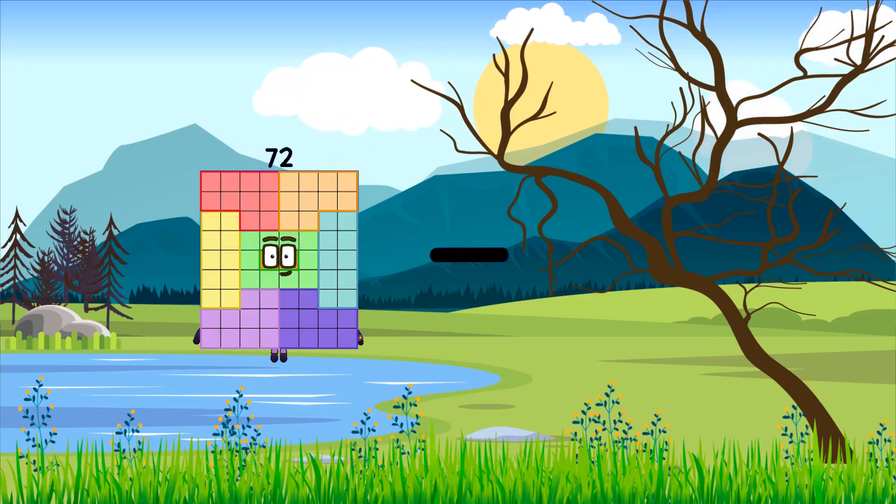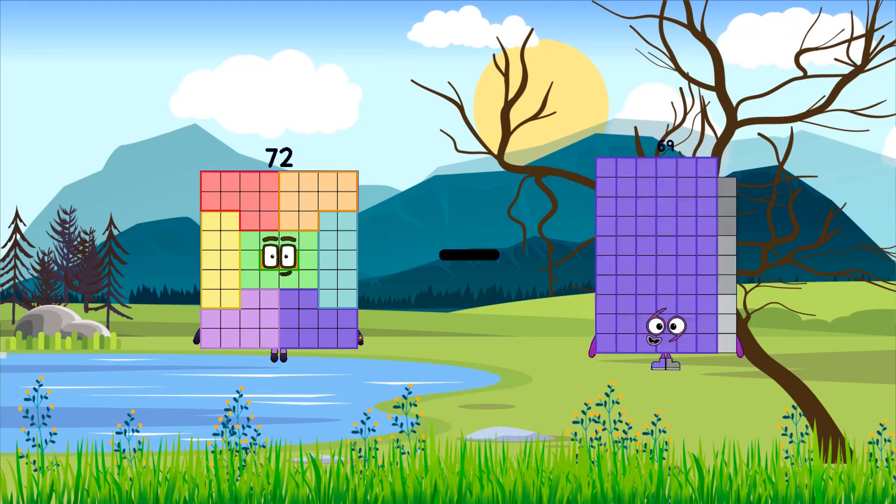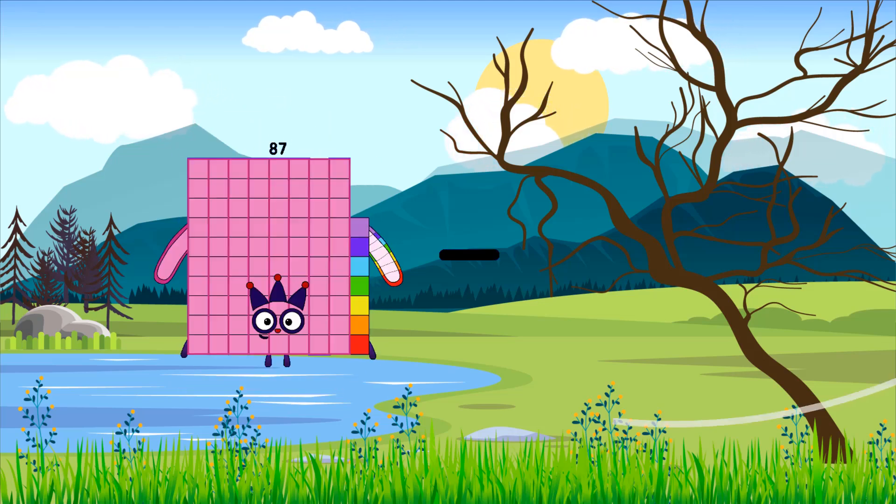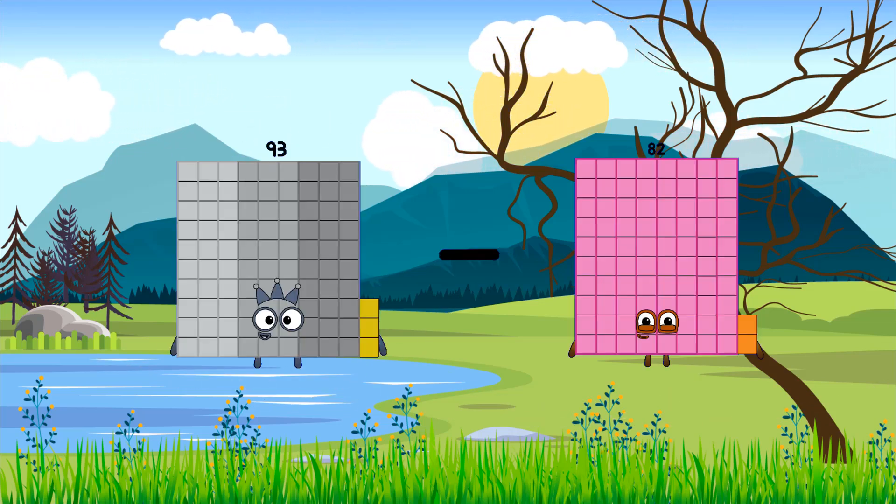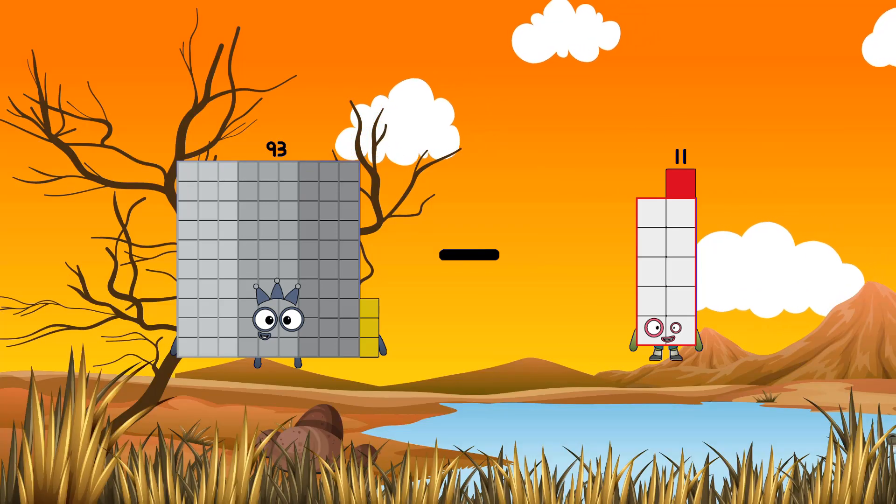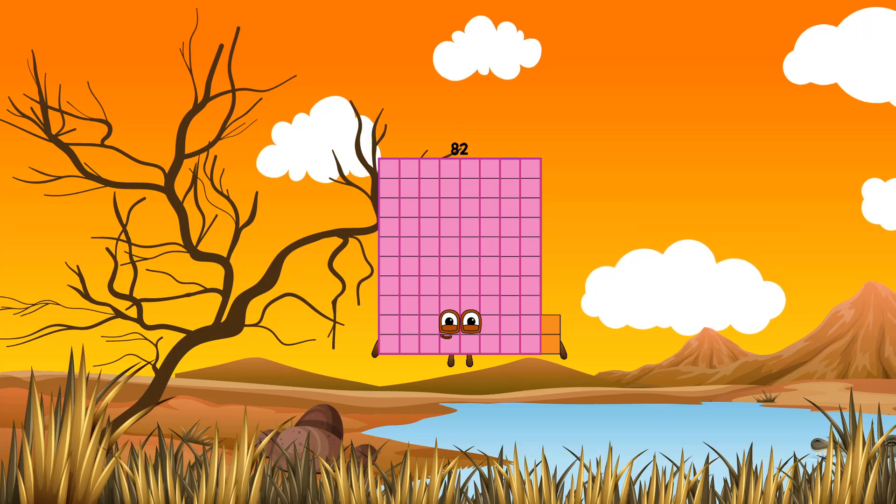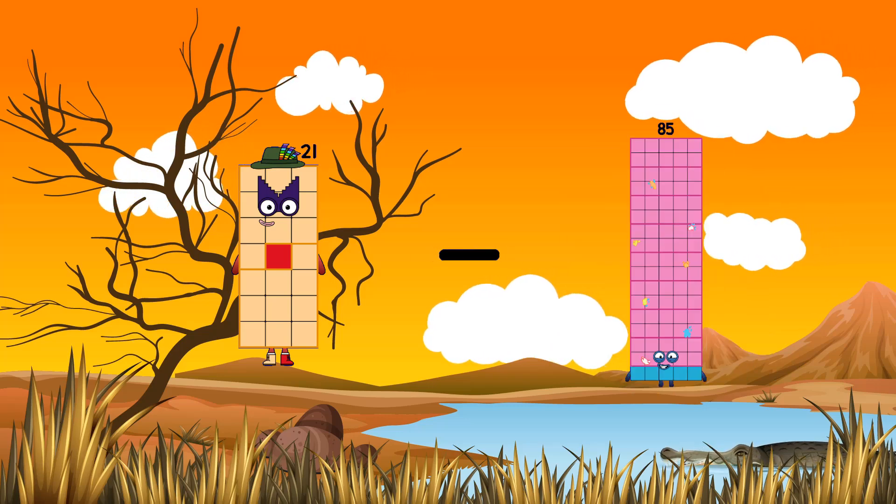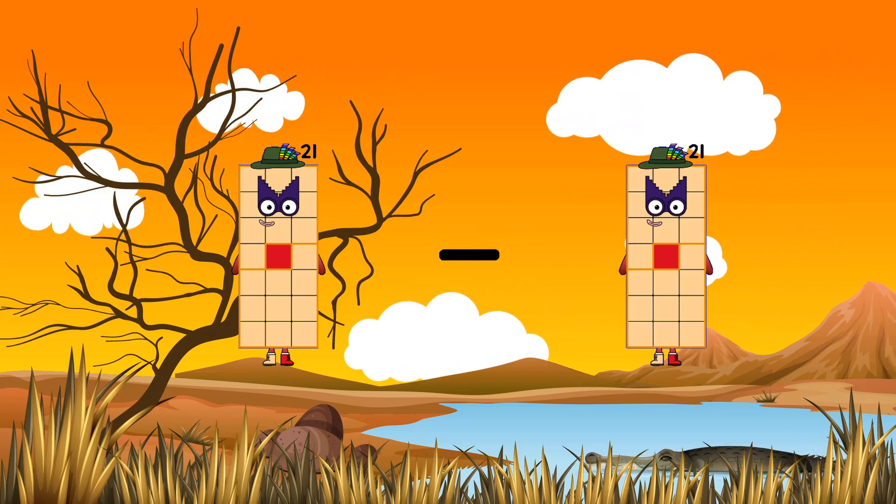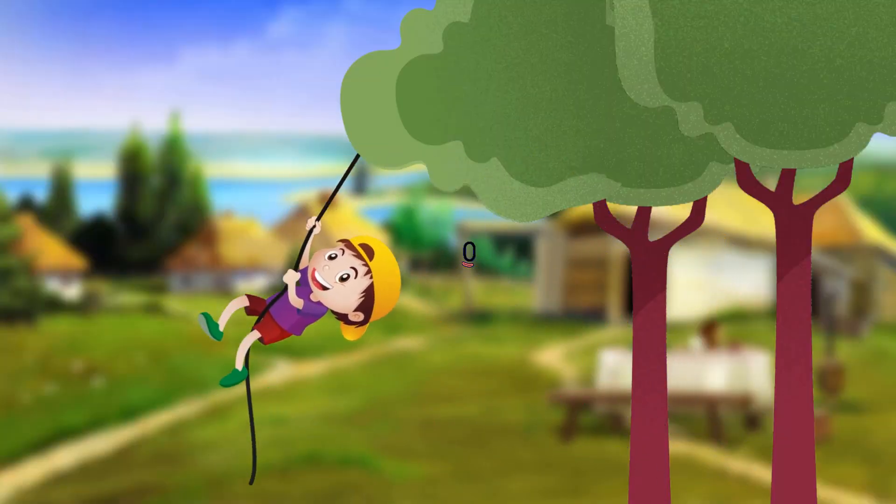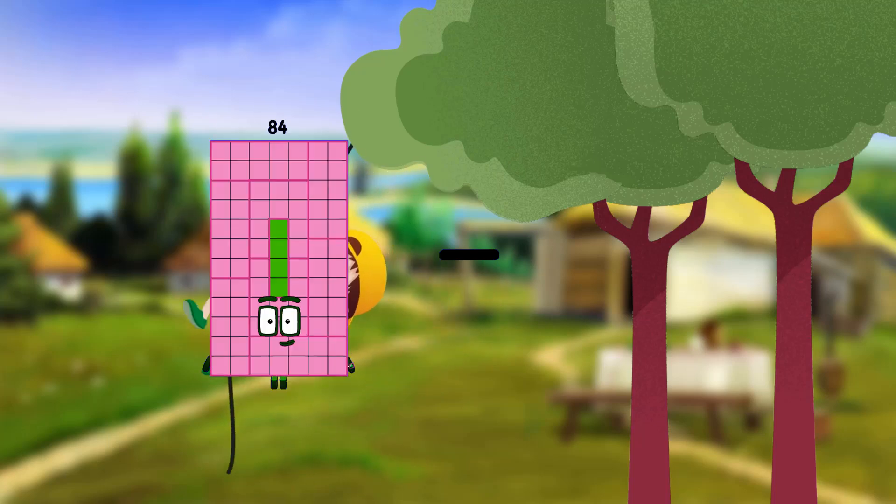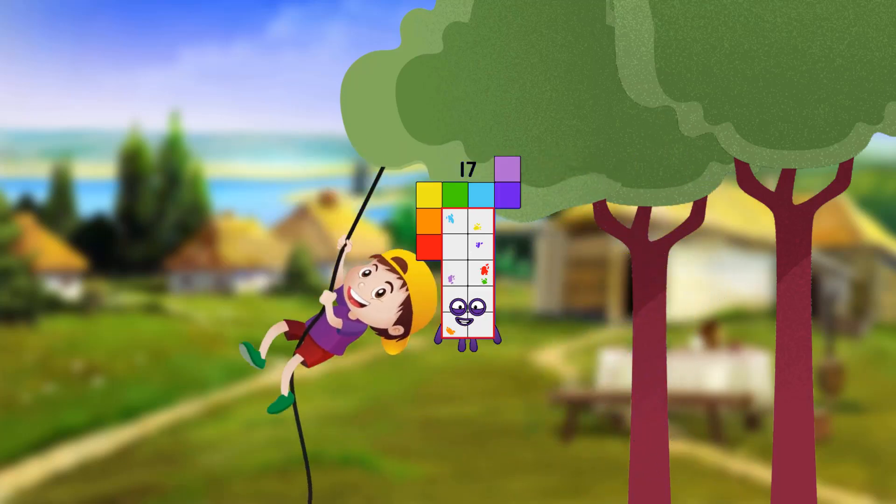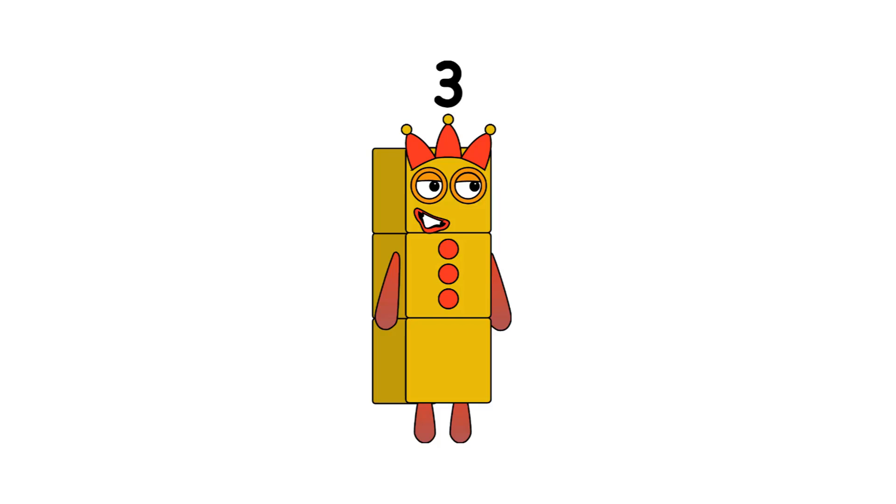72 minus 72 equals 0. 93 minus 11 equals 82. 21 minus 21 equals 0. 24 minus 7 equals 17. What a normal day at Numbl!